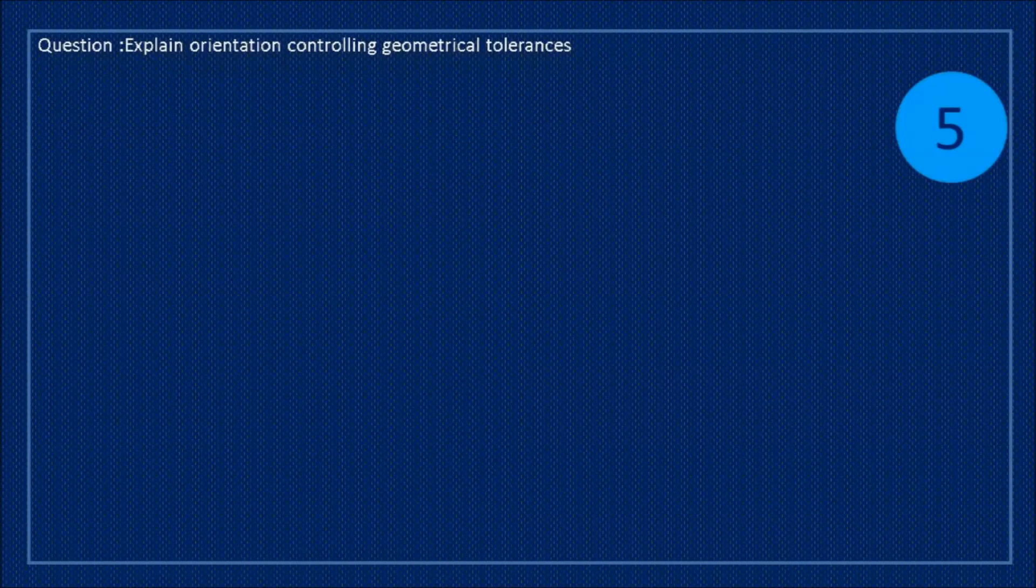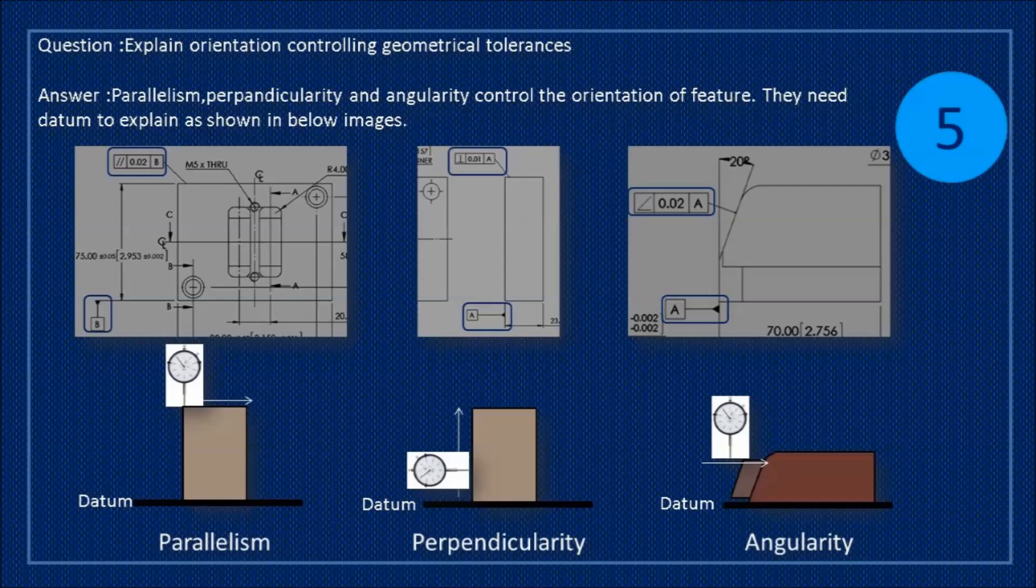Question: explain orientation controlling geometrical tolerances. Answer: parallelism, perpendicularity and angularity control the orientation of feature. They need datum to explain as shown in below images.